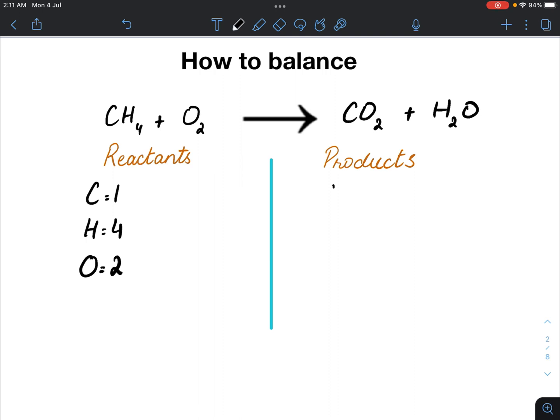On the product side, we have one carbon atom, two hydrogen atoms, and for the oxygen, we have two plus one equals three. But we are not going to write it now.